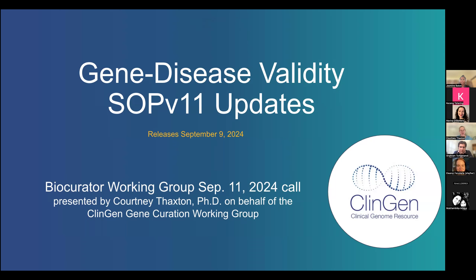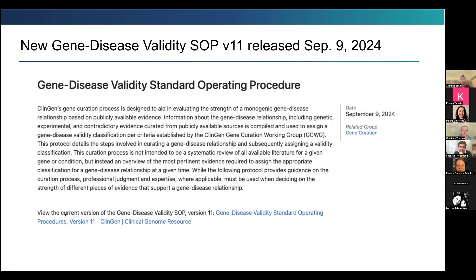Just as a spoiler alert, there are no scoring changes in this update — nothing huge. There is some additional guidance that you may find helpful, as we've heard requests for more details on specific items. The SOP was released this past Monday or Tuesday. You can access it on clinicalgenome.org under curation activities, gene curation, and training materials. With this new release, there will also be updates within the gene curation interface. From this day forward, provisional, approved, and published curations will automatically use SOP version 11. If you need to backdate to version 10, you will have to adjust that manually.